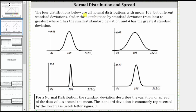The four distributions below are all normal distributions with mean 108, but different standard deviations. Order the distributions by standard deviation from least to greatest, where one has the smallest standard deviation and four has the greatest standard deviation.